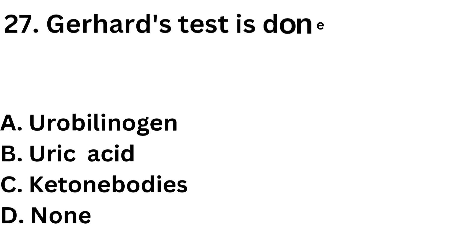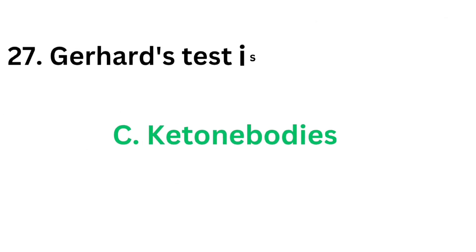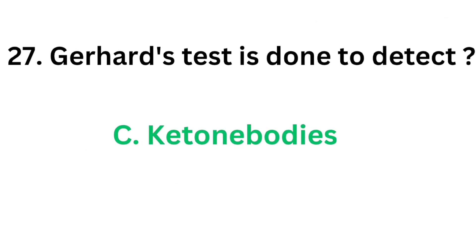Question number 27: Gerhardt's test is done to detect which parameter in a urine sample? Option A: Urobilinogen. Option B: Uric acid. Option C: Ketone bodies. Option D: None. The correct answer is Option C: Ketone bodies. Gerhardt's test is done to detect ketone bodies in urine.